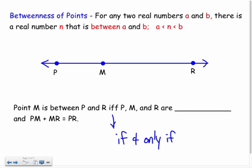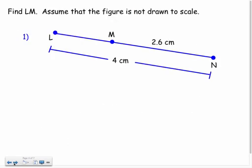Point M is between P and R if and only if P, M, and R are - what do you think they'd have to all be on the same? What line? So they'd have to be collinear, our term that we learned the other day. Collinear. And that would make PM plus MR equal to PR. Just kind of like our last example that we did.